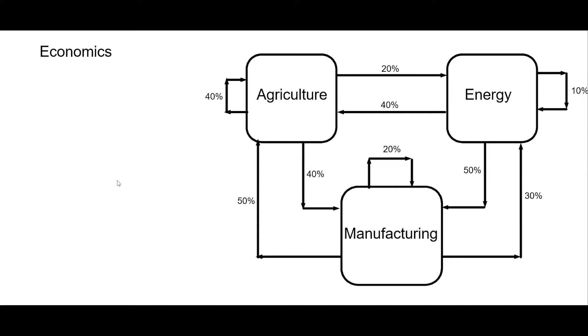We've got agriculture, energy, and manufacturing. We're gonna assume it's a closed economy. Everything's just flowing back and forth between these three sectors.